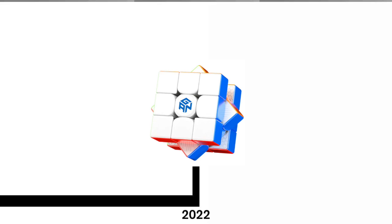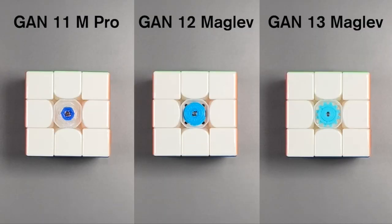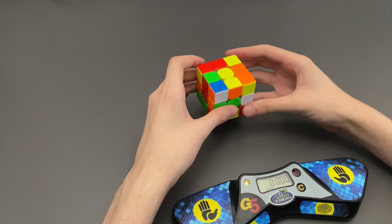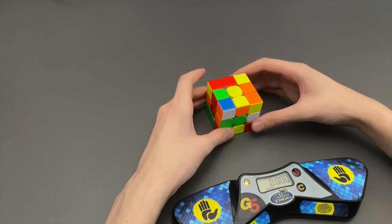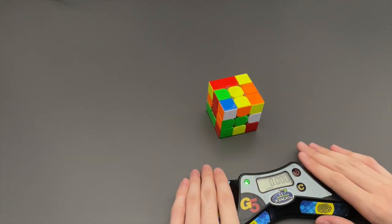So once again, on both of these cubes, they just resorted to changing the GES system, with a slightly different design layout that does the exact same thing. This just shows that over the last few years, GAN have been running out of ideas to captivate the cubing market.